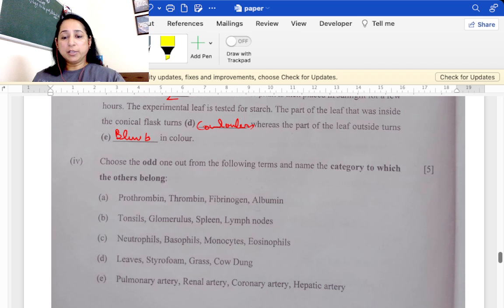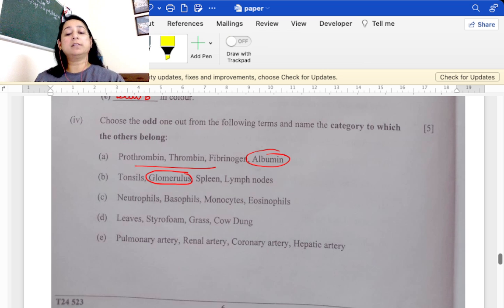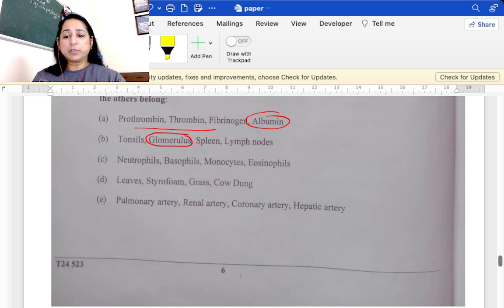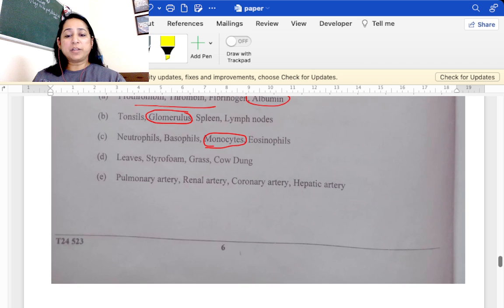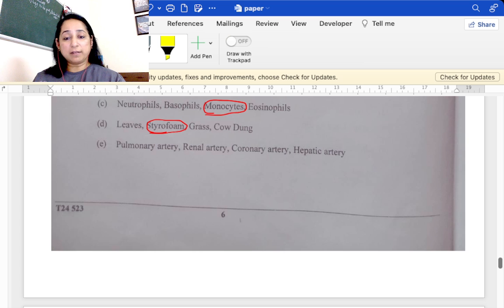Choose the odd one and category. First one is albumin, rest are clotting factors. Tonsil glomerulus, glomerulus is the odd one out, rest are lymph channels or lymph nodes. Neutrophils basophils monocytes eosinophils, monocyte is the odd one out, others are granulocytes. Leaf grass and cow dung are biodegradable, tray foam is the answer. Pulmonary artery renal artery coronary hepatic artery, pulmonary artery is the odd one because others carry oxygen and pulmonary artery carries carbon dioxide.